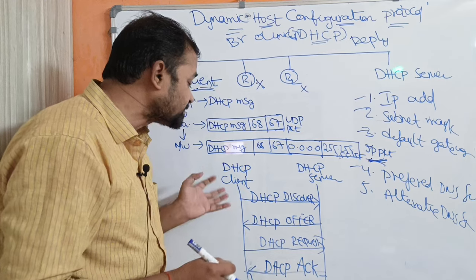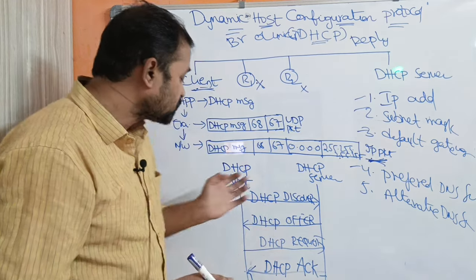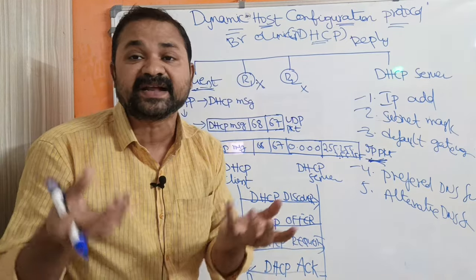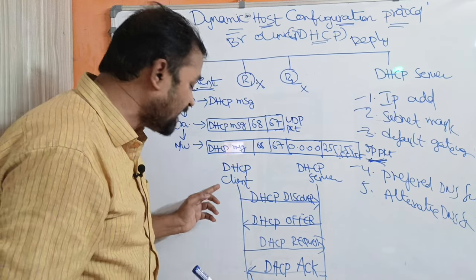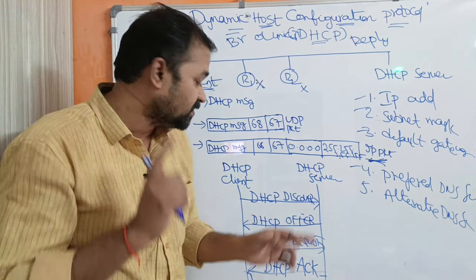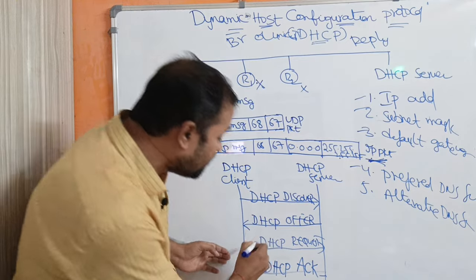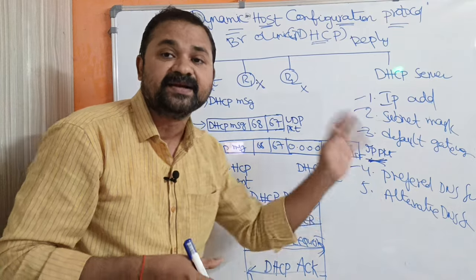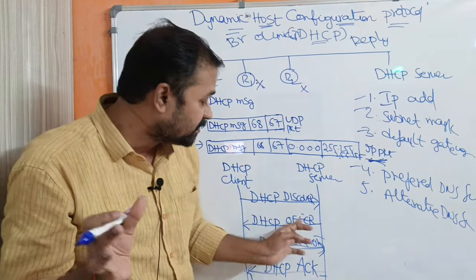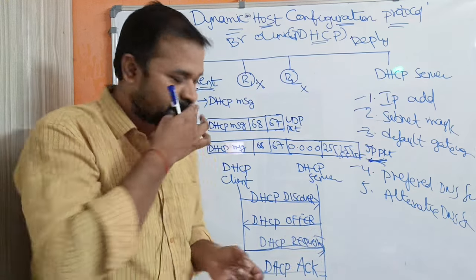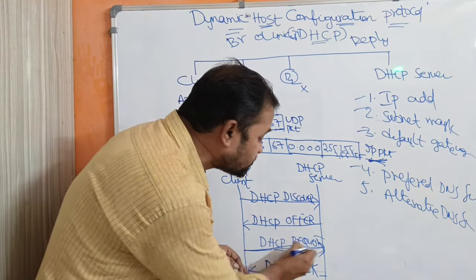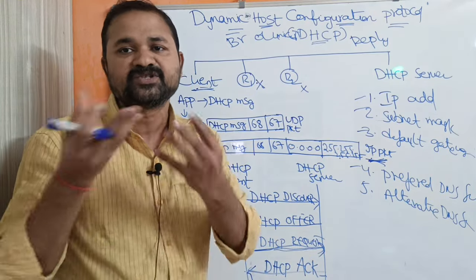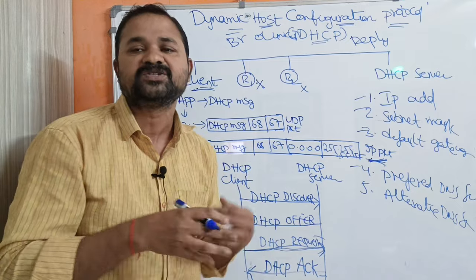Since we may have multiple DHCP servers, the DHCP client may receive multiple DHCP Offer packets. The DHCP client will accept one of the offers and send a DHCP Request message to the corresponding DHCP server — indicating: out of all the offers, it accepts one. This request message essentially says: I am ready to accept your details, please provide them so I can use the internet.